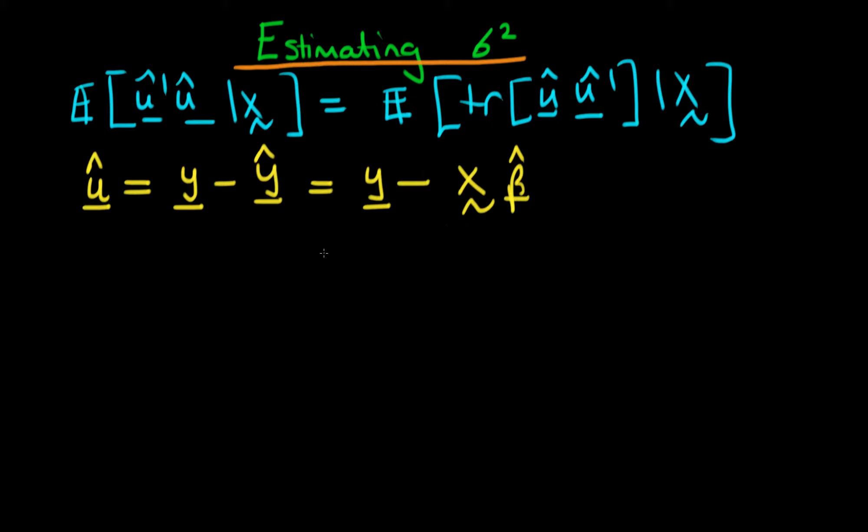Furthermore, if we substitute in the explicit form for beta hat here, we're going to have that this is equal to y minus x times, open brackets, x primed times x all to the power minus 1 times x prime times y, which then we can write as open brackets I minus this whole second expression before the y, which is just Px, our orthogonal projection matrix, all times y.